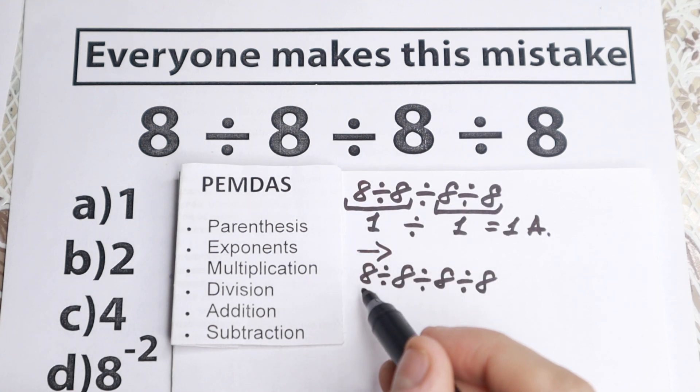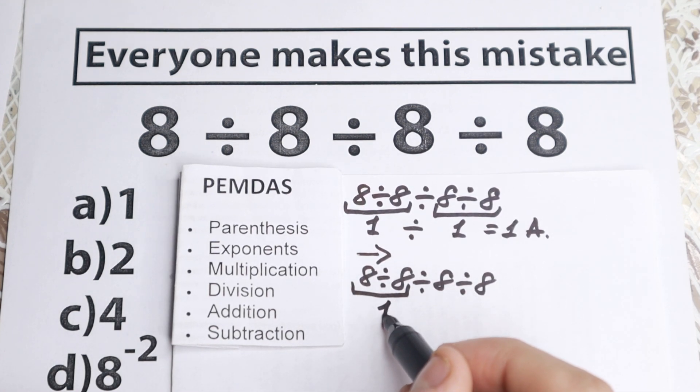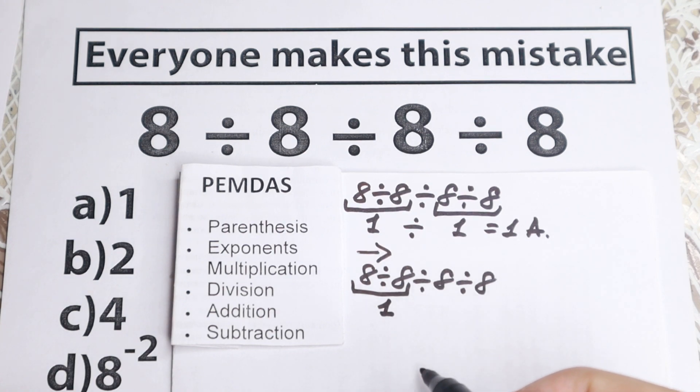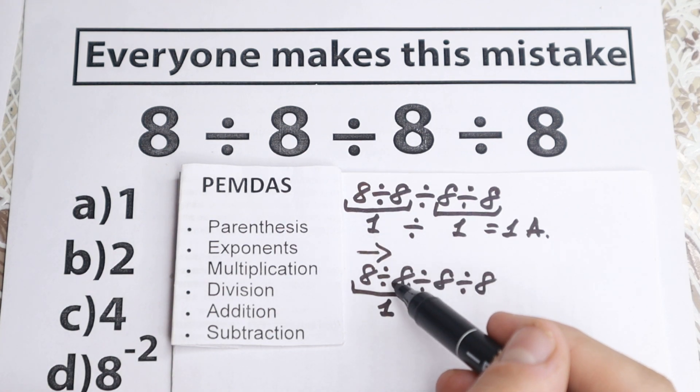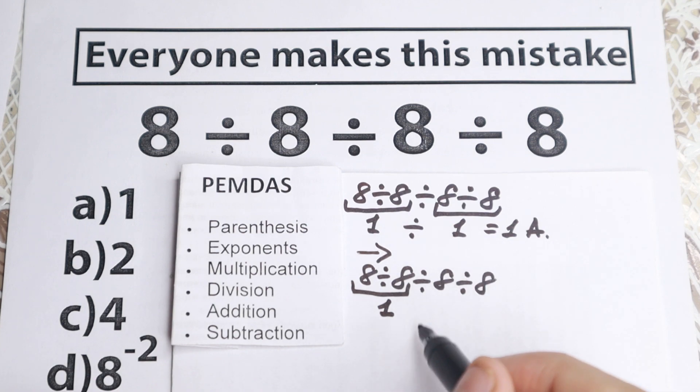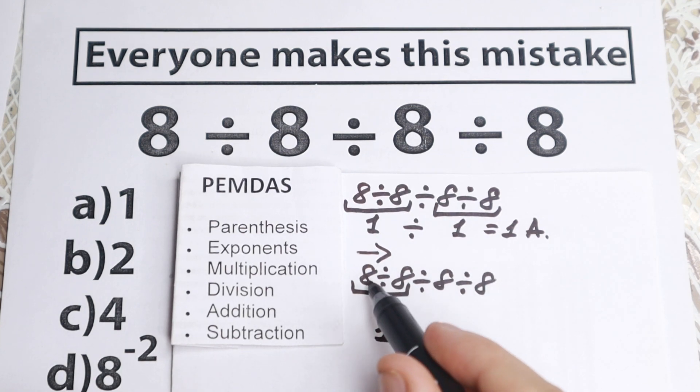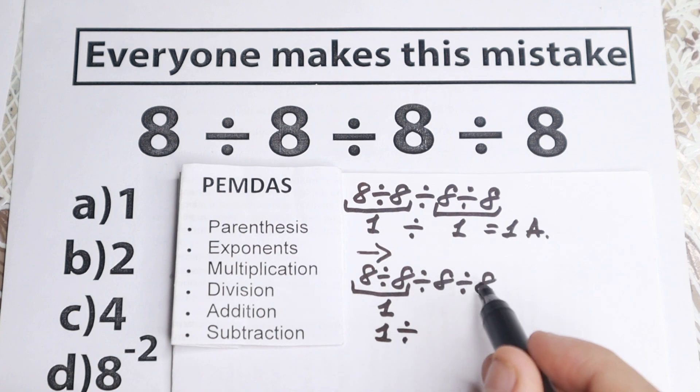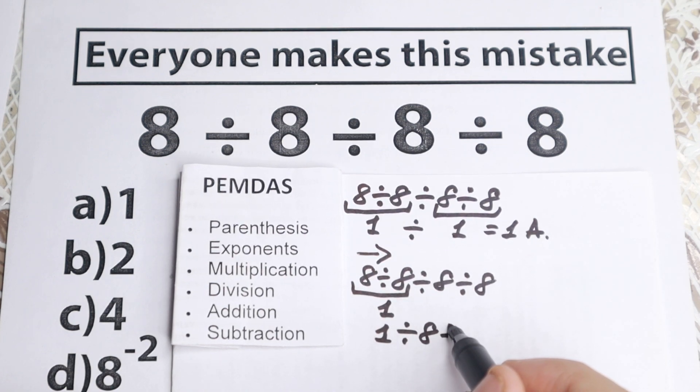So as you can see, if we go from left to right, we start with this step. So the same step as right here. So 8 dividing by 8, which is equal to 1. And then a lot of students do solve this problem like that, but we need to go from left to right, so we rewrite this question. So this is equal to 1 also, and we still have this in the end. So 1 dividing by 8, and dividing by 8, equal to.